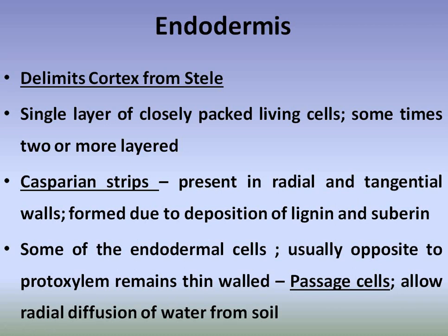This is where we see the deposition of lignin and suberin. In roots where secondary growth occurs, the endodermis is shed along with the cortex. But in roots that remain in the primary state without secondary growth, the suberin lamella persists on the entire inner wall of endodermal cells. Some endodermal cells opposite the protoxylem remain thin-walled.